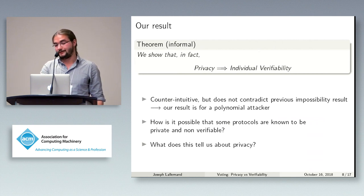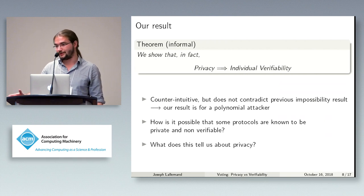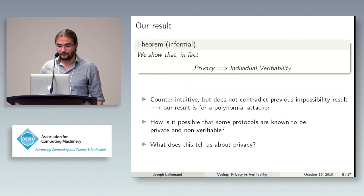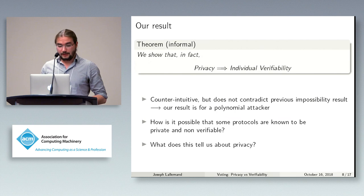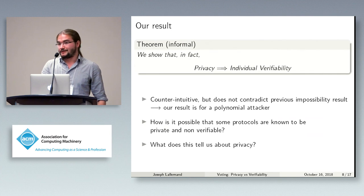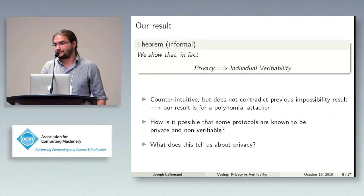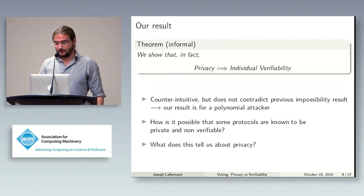This may seem strange and counterintuitive. It does not contradict the previous impossibility result, because that result was only for an unbounded attacker, while here we're considering, as is usual for cryptographic properties, a polynomial attacker. This result also raises interesting questions: how is it possible that some protocols have been proved private without being verifiable? And what does this tell us about privacy, since it seems there is something not well understood about it?